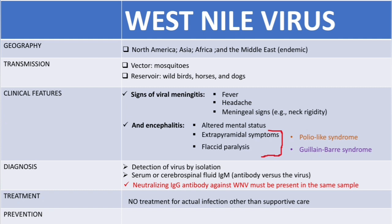On prevention, a vaccine is still being developed, so we don't have one yet. What we can do is avoid being bitten by mosquitoes. Different ways include eliminating mosquito breeding areas such as getting rid of stagnant water, wearing long-sleeved clothing, and using mosquito repellents.